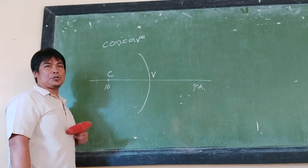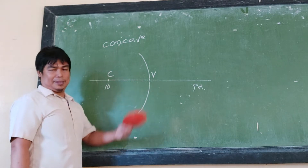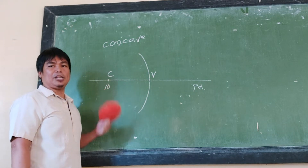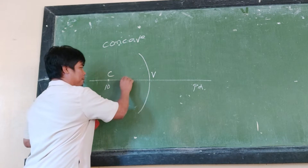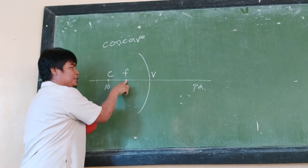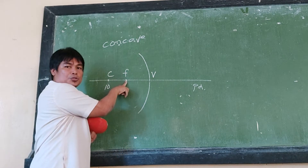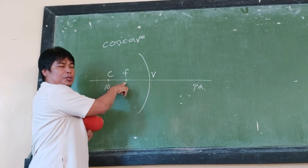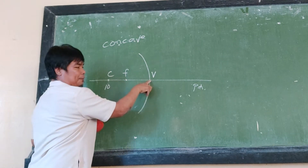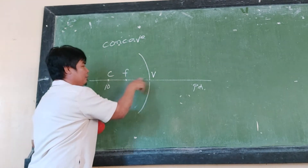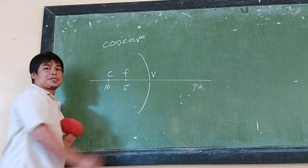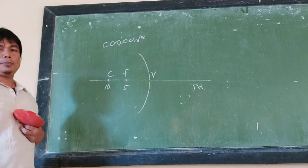If the radius of curvature is 10 units, then the focal length is half of that radius of curvature. So the focal length is 5 units, and that midpoint is called the focus, denoted by F. The line FV is the focal length, which is equal to 5 units.